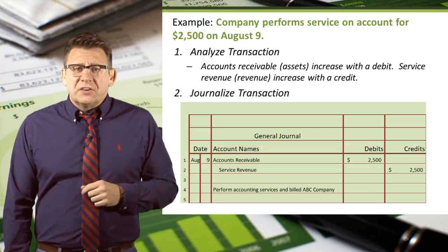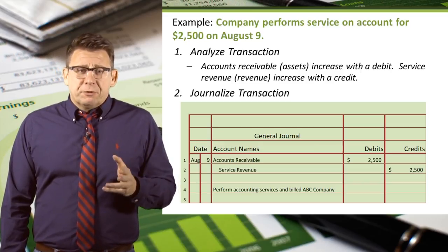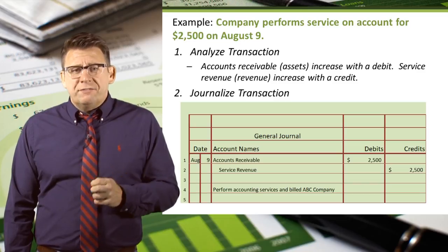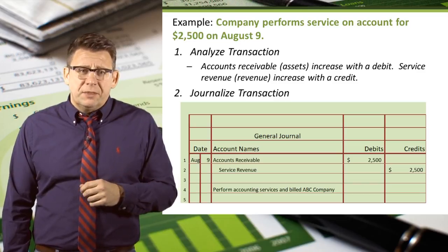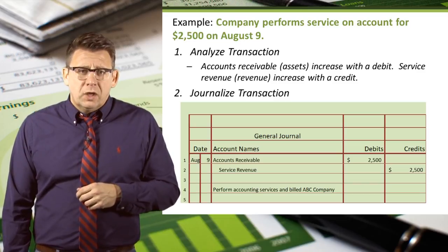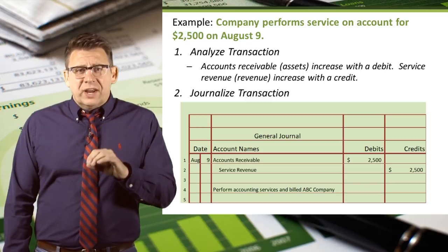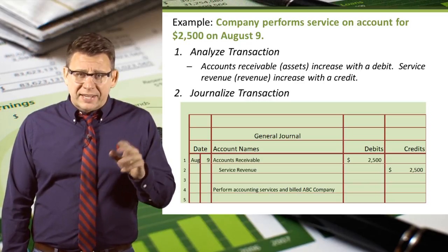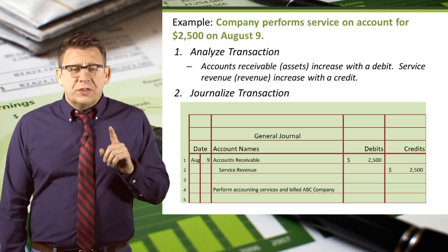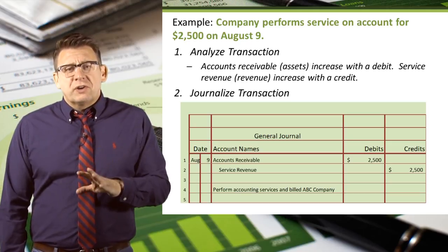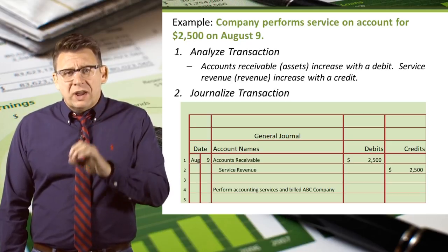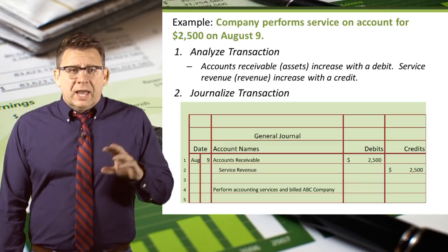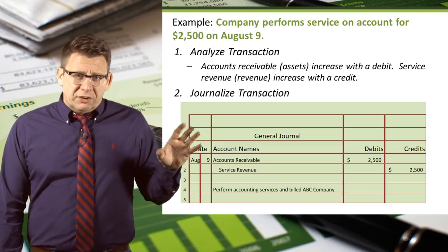Let's look at another example. A company performs service on account for $2,500 on August 9th. We analyzed this transaction and determined that accounts receivable, an asset account, is increased with a debit, and service revenue, a revenue account, is increased with a credit.